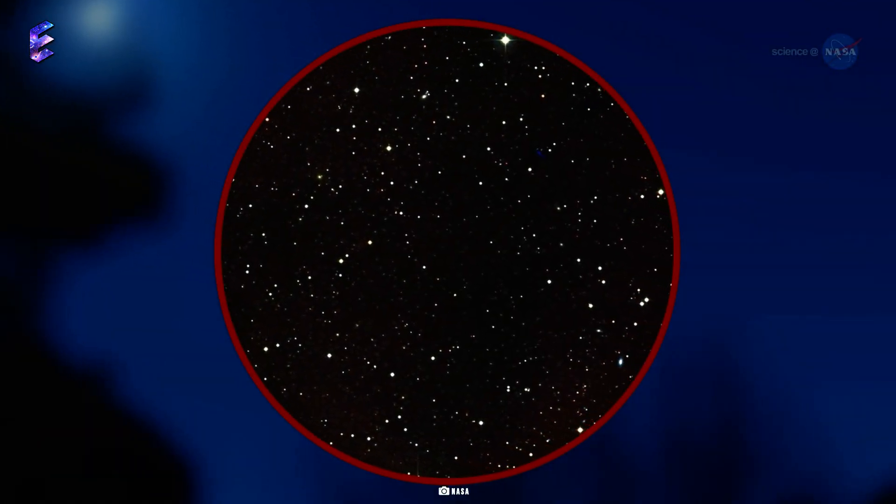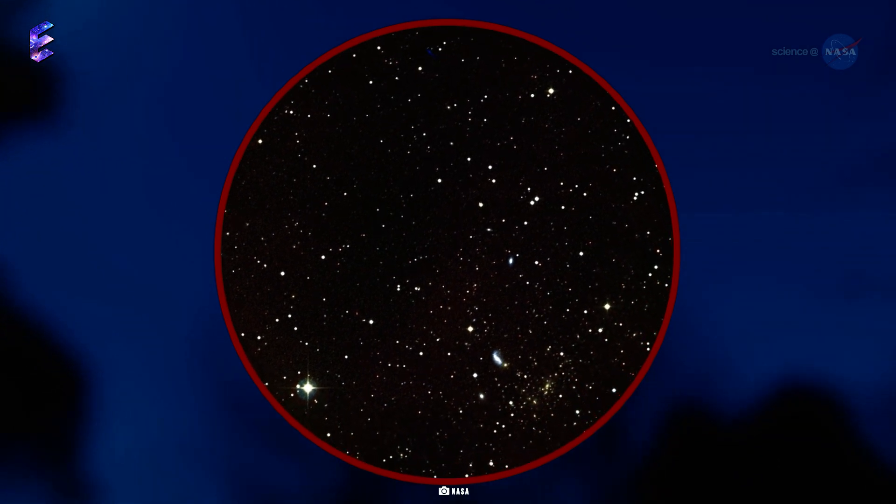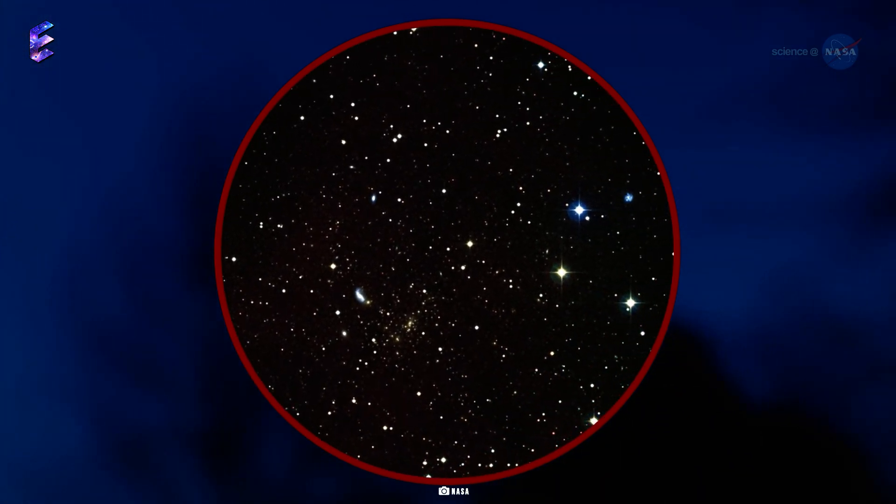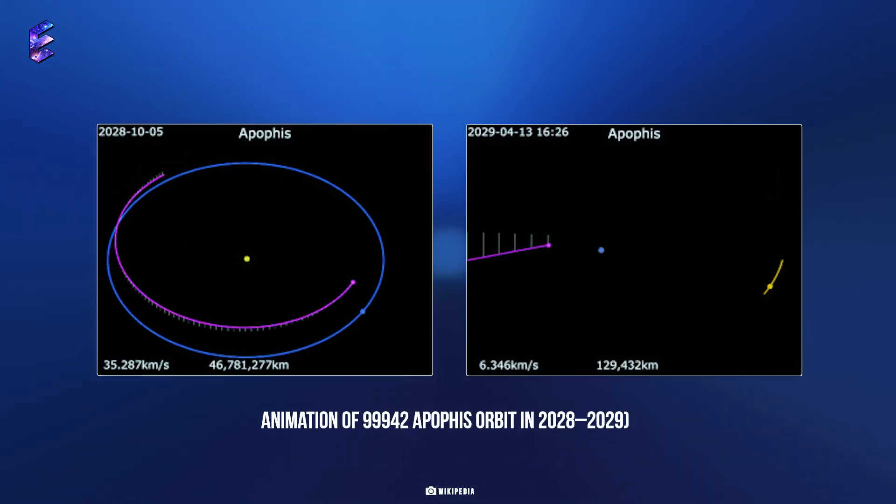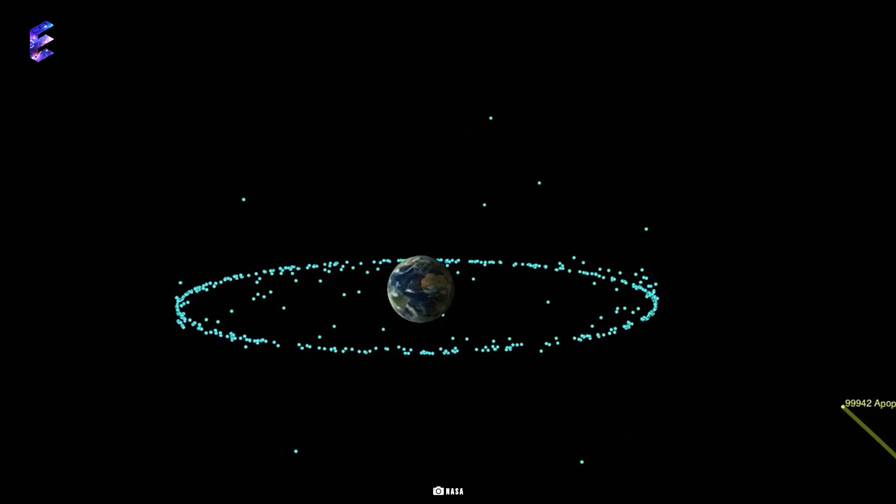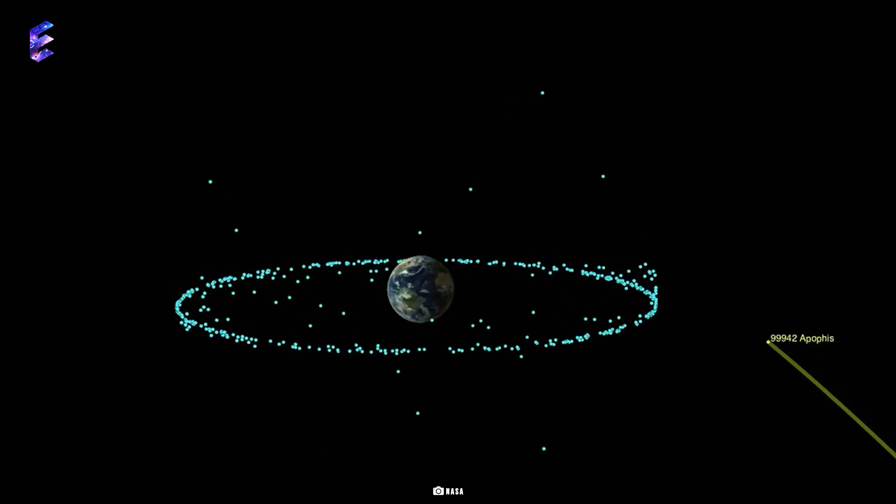Upon its discovery in 2004, it was termed as the most hazardous asteroid that could impact Earth. The initial observations further indicated a probability of up to 2.7% of hitting Earth in April 2029. Upon closer examination of its orbit, the 2029 impact was eliminated.